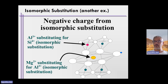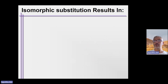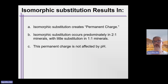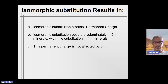When natural weathering occurs and there is substitution of one cation for another within the matrix of the clay particle itself, negative charge arises. Isomorphic substitution results in a permanent charge — permanent because the natural weathering scheme does not go backwards. Silicon won't displace aluminum after silicon has been replaced, because silicon is eventually weathered out of soils and aluminum is left behind. It is a permanent charge.